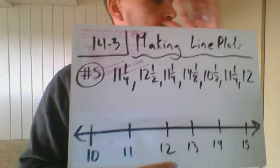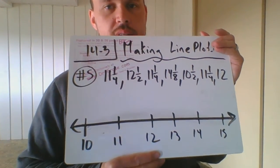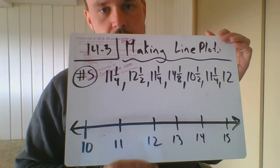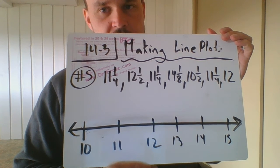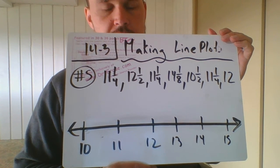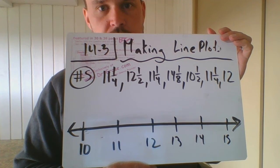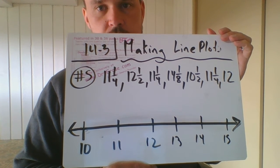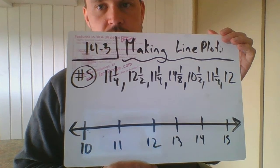Okay, I'm jumping up to number five now on independent practice. I'm going to give you the scaled down version of how to do these. So what I did is I wrote down all the data that you have for number five. You have 11 and a fourth, 12 and a half, 11 and a fourth, 14 and an eighth, and 10 and a half, 11 and a fourth, and 12.